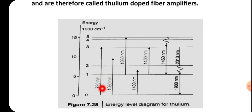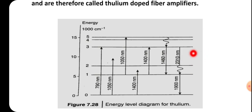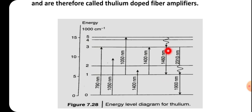The pump sources used are 790 nanometer, 1550 nanometer, and 1400 nanometer. For amplifier action, the transition of electrons takes place from level 3 to level 1. This 3-to-1 transition emits a wavelength of 1460 nanometer, which corresponds to the amplified light. The amplification process emits this wavelength.